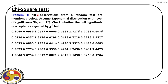Let us take an example. We have 40 observations from a random test. We assume the samples come from a population that follows exponential distribution, and we check with this null hypothesis at confidence levels of 5% and 1% whether it is accepted or rejected by the chi-square test.